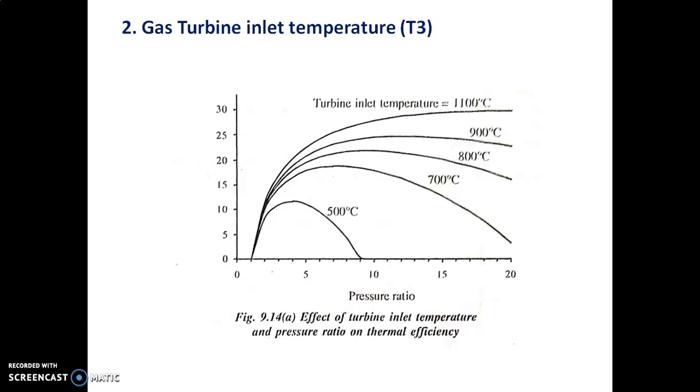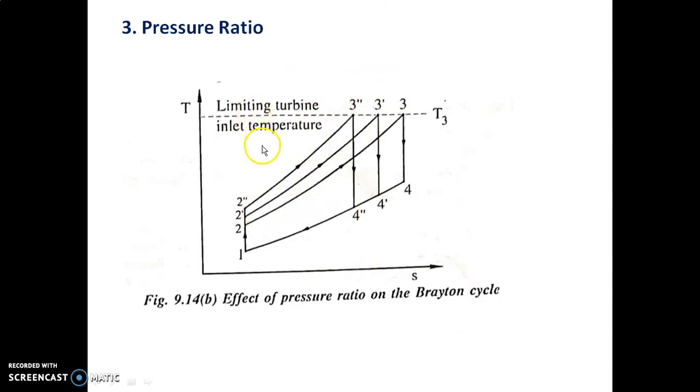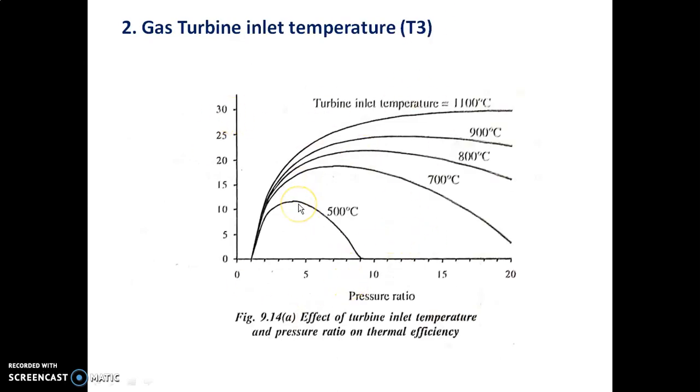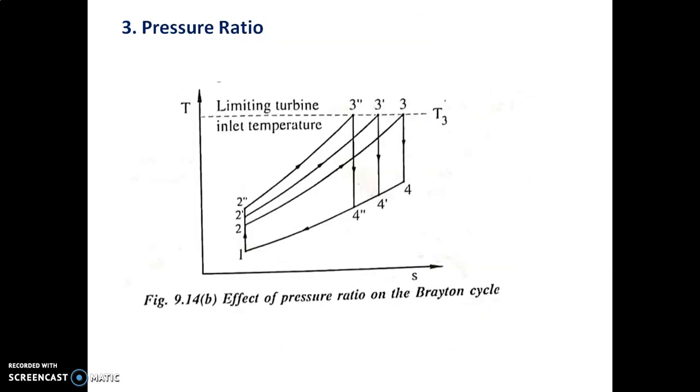As the pressure ratio increases, heat supply as well as heat rejection are reduced, so thermal efficiency increases. But the rate of change of heat supply is not the same as the rate of change of heat rejection. Therefore, as pressure ratio increases, thermal efficiency increases until it becomes maximum at optimum pressure ratio, and then it drops off with further increase in pressure ratio. As turbine inlet temperature increases, the efficiency peak is shifted to higher pressure ratio.